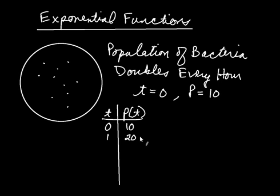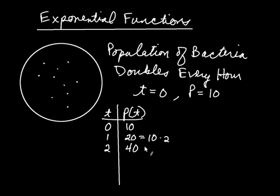Now twenty can be written as ten multiplied by two, and you'll see why we're doing that in a moment. After two hours — after one more hour — the population doubles again, so now it's up to forty. To get to forty, all you have to do is multiply the twenty by another two. So this is written as ten times two squared — simply multiplying by another two.